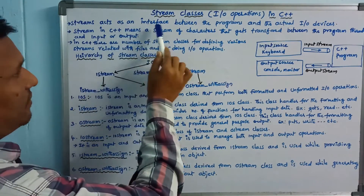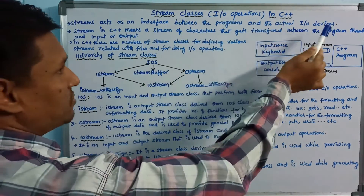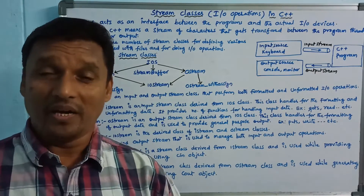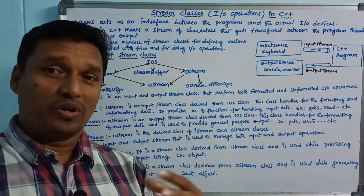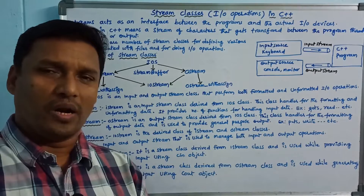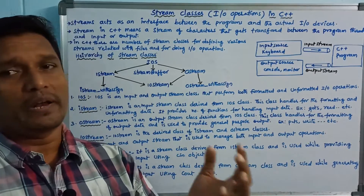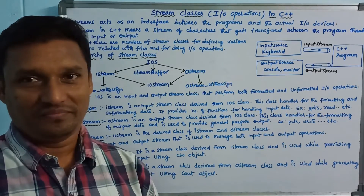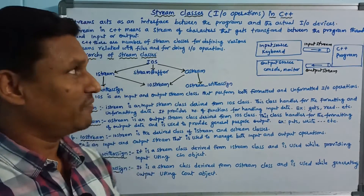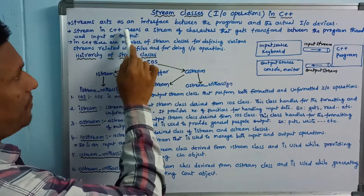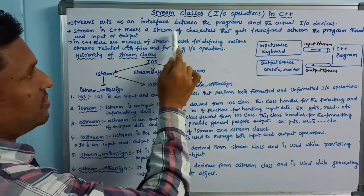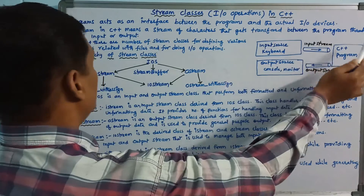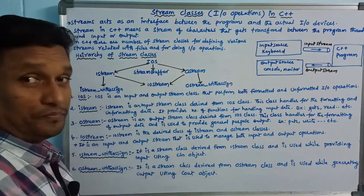Streams are an interface between the program and the actual I/O devices. Stream in C++ means a stream of characters that gets transferred between the program and input or output.